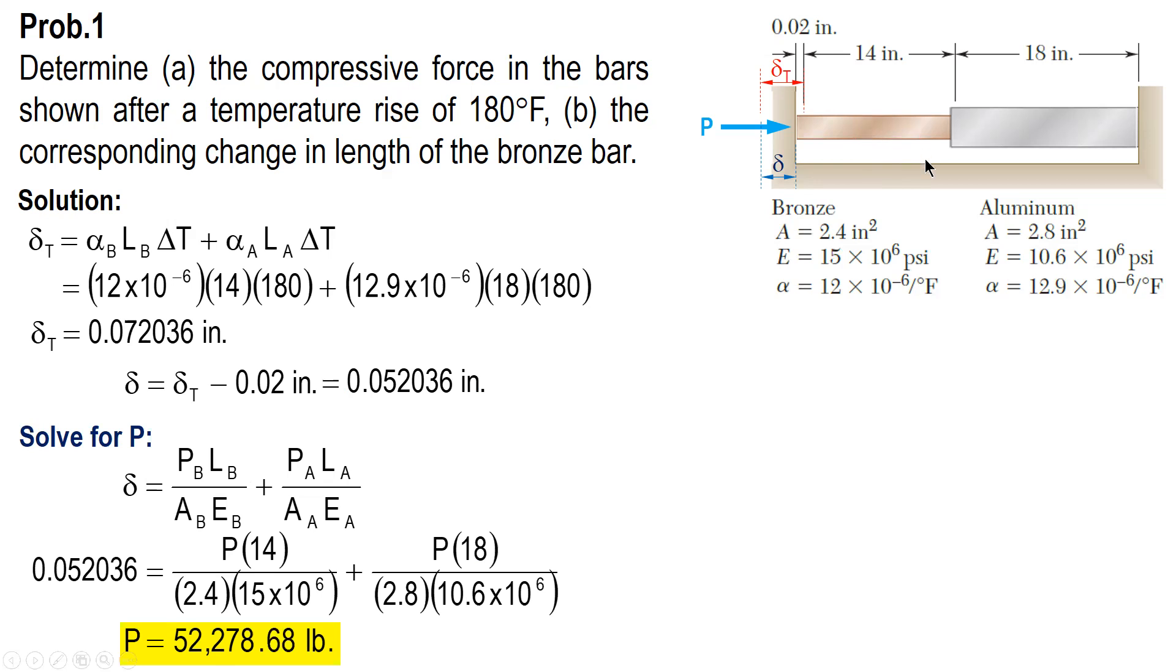The change in length of aluminum and bronze must total 0.02. Since the initial position of the assembly is here, and then, the final position is at the wall. The two bars must stretch by a total of 0.02. How much is the elongation of the bronze bar?